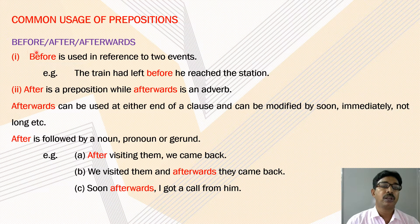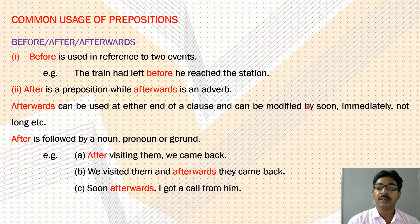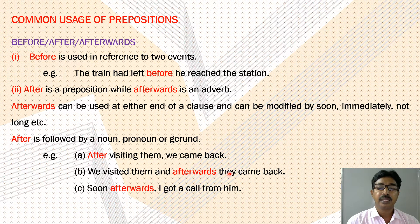The prepositions 'before', 'after', and 'afterwards': 'before' is used in reference to two events — for example: the train had left before he reached the station. 'After' is a preposition while 'afterwards' is an adverb. 'Afterwards' can be used at either end of a clause and can be modified by soon, immediately, not long, etc. 'After' is followed by a noun, pronoun, or gerund — for example: after visiting them, we came back. Example with 'afterwards': we visited them and afterwards they came back; soon afterwards, I got a call from them.